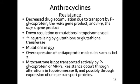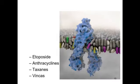Resistance occurs due to transport by P-glycoprotein, the MDR multiple drug-resistant gene product, and MRP, the multiple-resistant protein. Phenotypically and functionally these are very similar, but genetically they're different. We can also have downregulation by mutations of topoisomerase 2, increased neutralization factors, and overexpression of anti-apoptotic molecules such as BCL-2. Notably, mitoxantrone is not transported by P-glycoprotein, and resistance occurs through topoisomerase 2 inhibition.